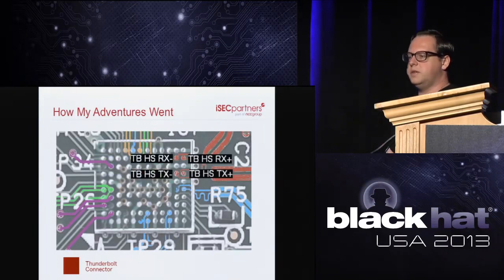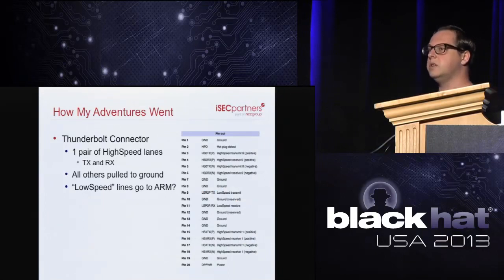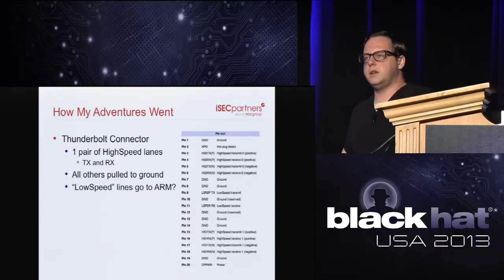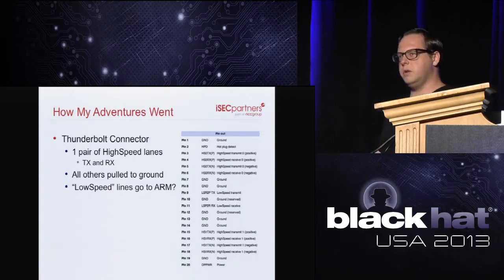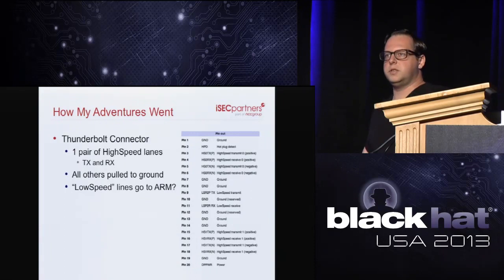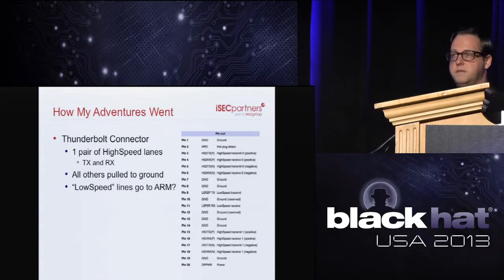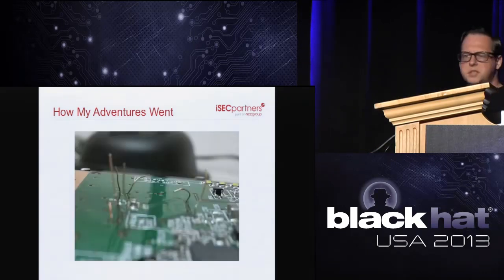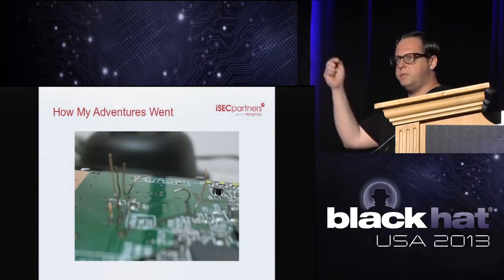We can now pin out the Thunderbolt connector and identify the high-speed lines. This is single-lane PCI Express, so most other high-speed lines are pulled to ground. There are also two lines called low-speed lines — tracing those out, they don't go to Thunderbolt at all; they go directly to the ARM Cortex. So when you plug in a Thunderbolt connection, you're actually connecting the Apple directly to the ARM Cortex over low-speed lines. Checking the data sheet confirms these plug directly into the UART of the ARM Cortex.